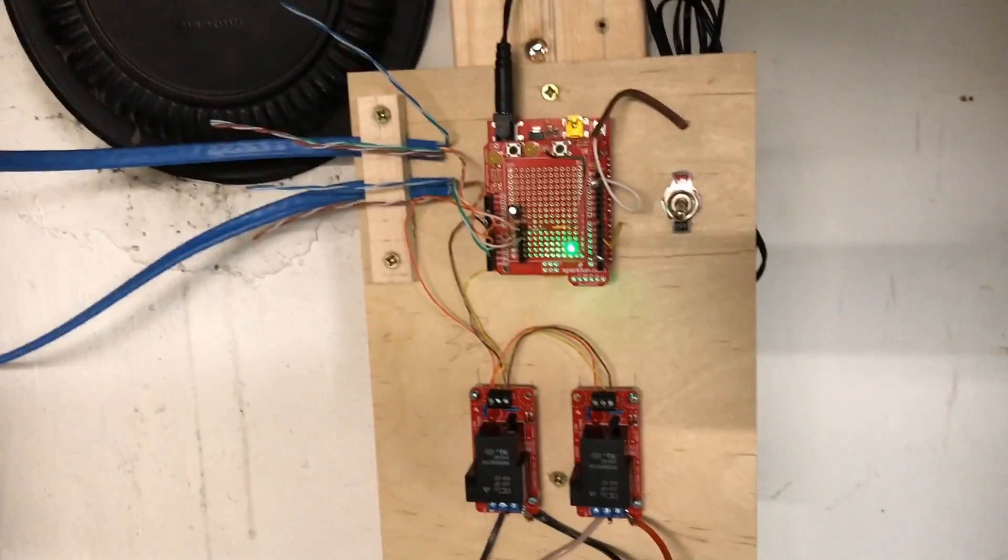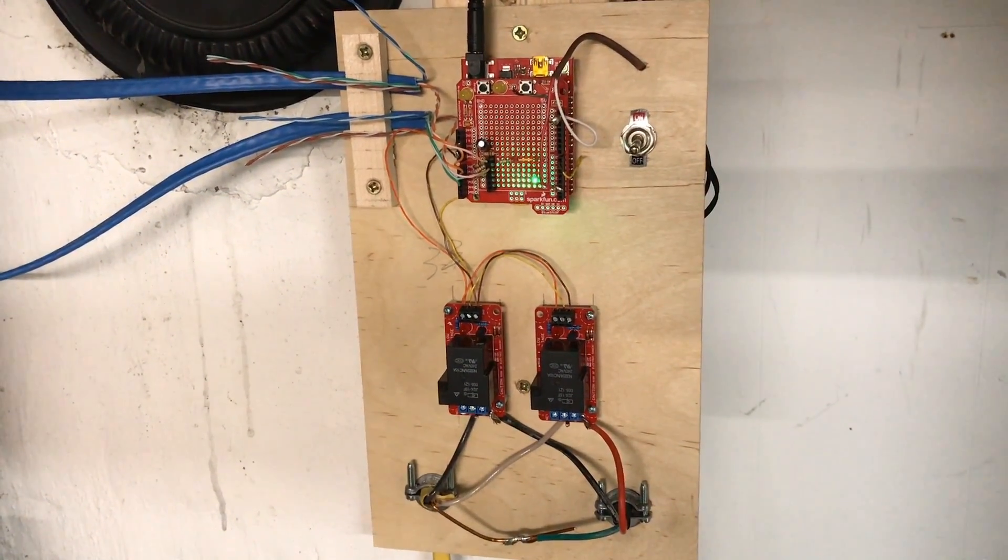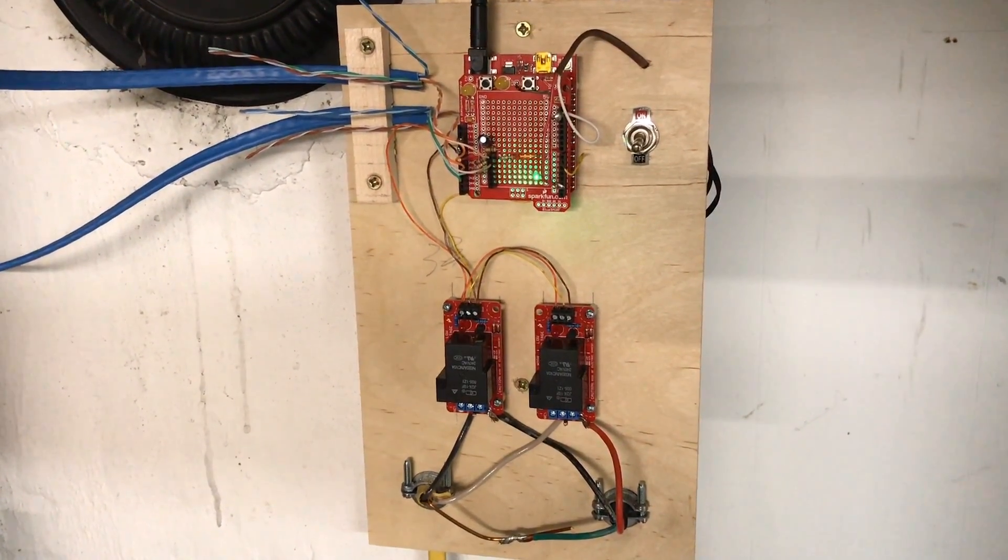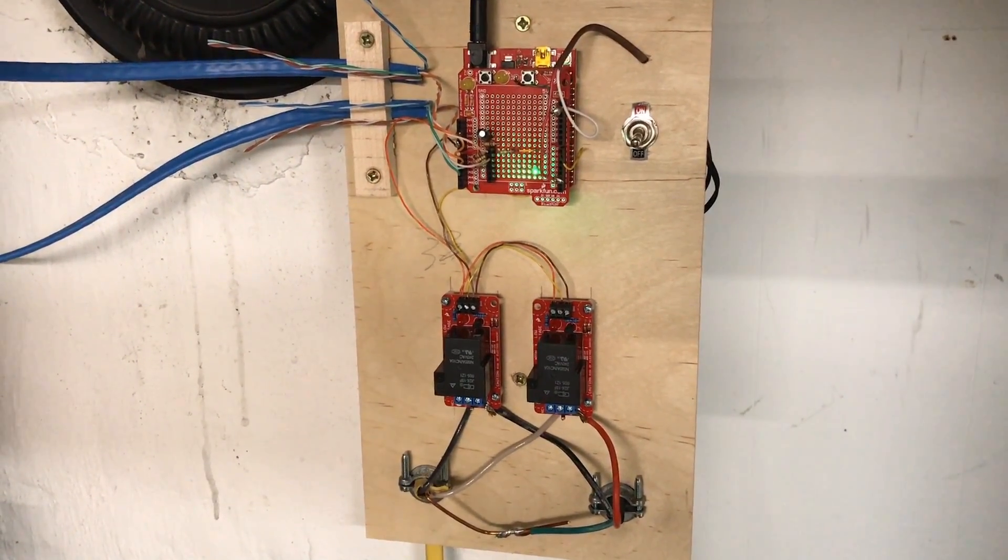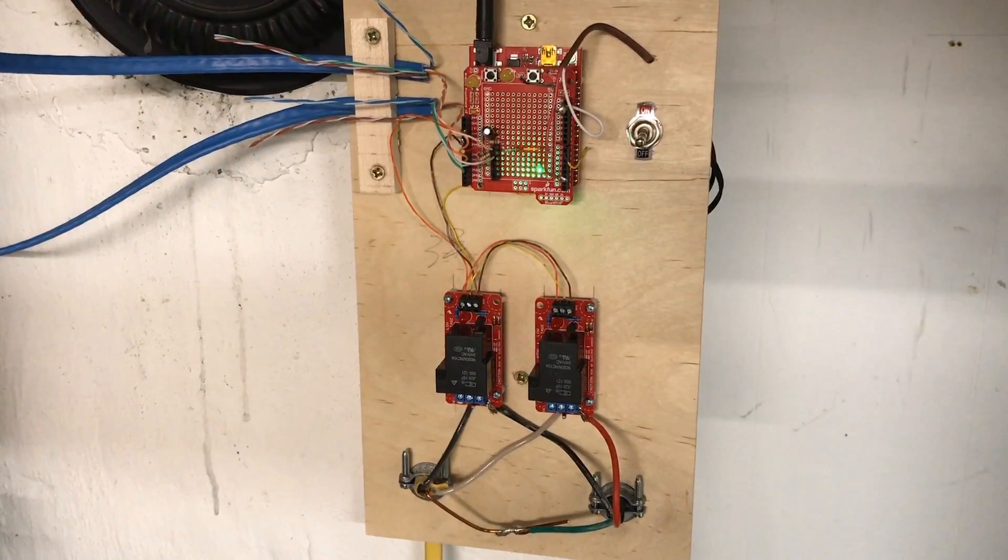So this is an Arduino board connected to a couple relays and a few current sensing transformers that will automatically tell whenever I turn on one of my power tools in the shop and then switch on the dust collector. There's also a manual on-off switch over there for times you want to run the dust collector without actually running a tool.